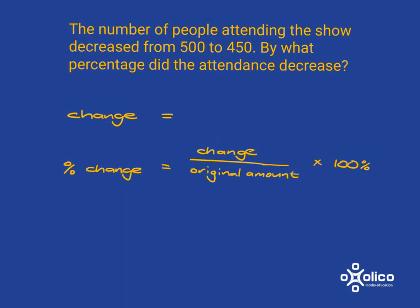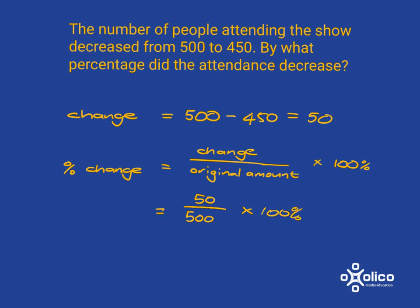Now let's look at this example: if the number of people attending the show decreased from 500 to 450, by what percentage did the attendance decrease? We just need to work out the change — it went from 500 down to 450, so it dropped by 50 people. When we work out the percentage change, we're talking about that change relative to the original amount. How many people were at that show originally? It's 500. So you take your change over the original amount and turn it into a percentage, giving you an answer of 10% — a decrease of 10%.